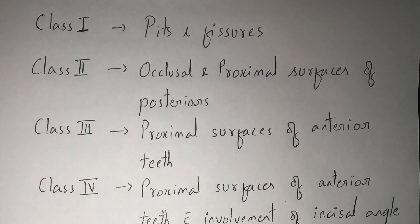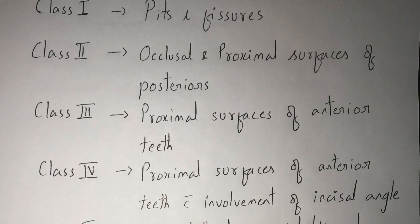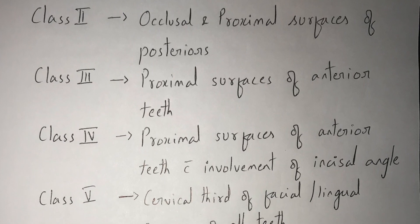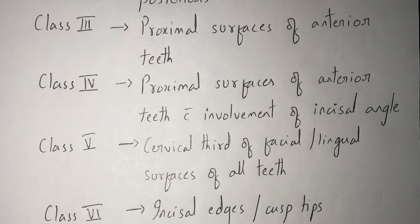Class 1 involves pits and fissures. Class 2 involves the proximal surfaces and occlusal surfaces of posterior teeth which include molars and premolars. Class 3 involves the proximal surfaces of incisors and canines, in other words anterior teeth.